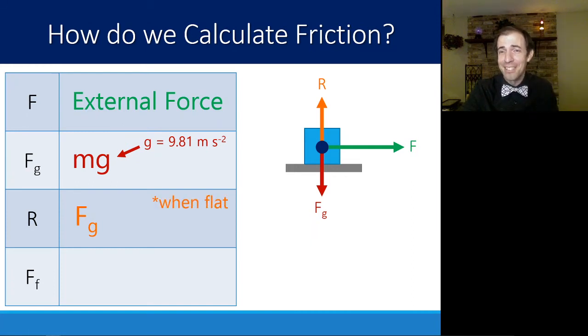Again, asterisk here, when this surface is flat. When we talk about ramps in a little bit, we will not necessarily be assuming this. R will just counteract a different force. Now our last force is the force of friction. If we're pulling this block to the right, then the force of friction is counteracting that motion, pulling to the left. We know that we can calculate coefficient of friction as long as we know R. Friction is just μ times R.